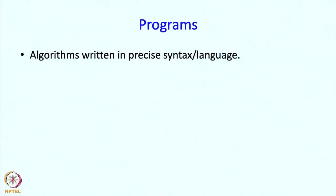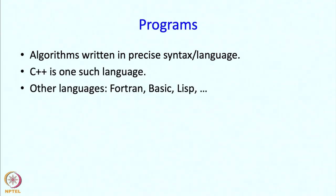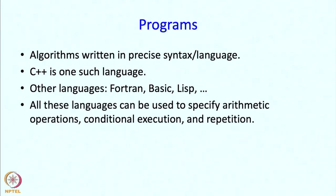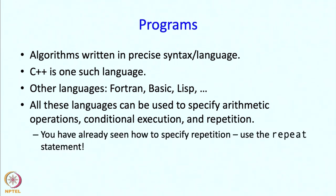So what is a program? A program is simply an algorithm written in a precise syntax or a precise language. C++ is only one such language. There are other languages like Fortran, Basic, and Lisp. All these languages can be used to specify arithmetic operations, conditional execution, and repetition. You have already seen how to specify repetition using the repeat statement. This is actually a fairly important, crucial point.